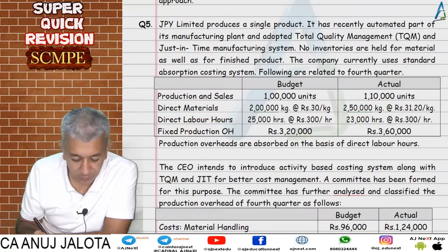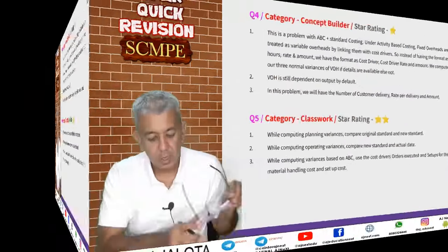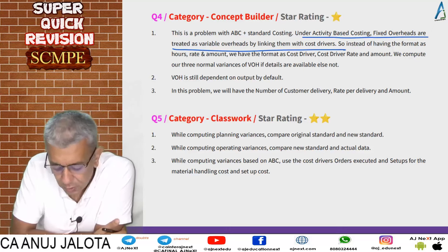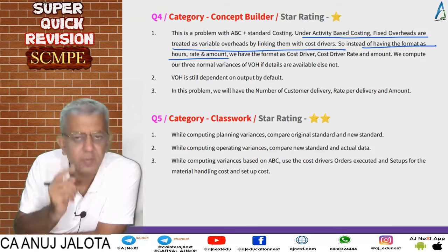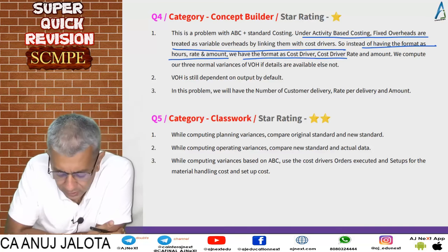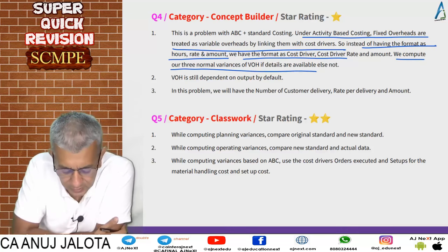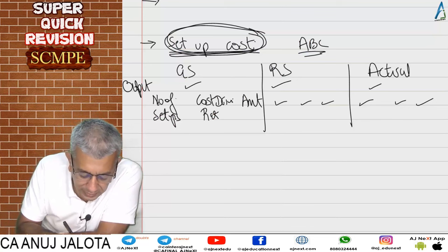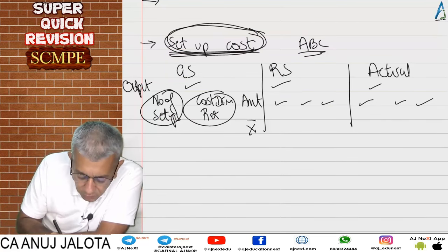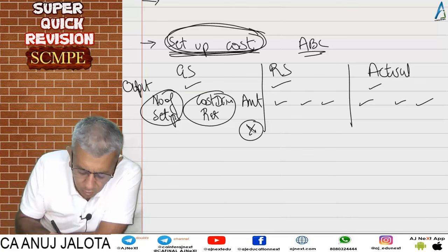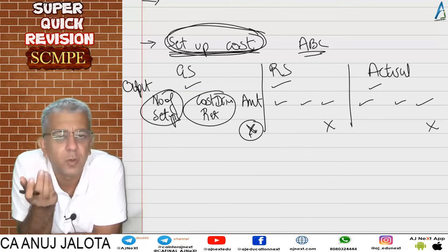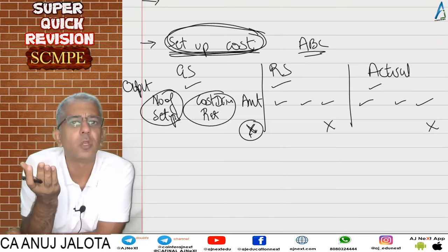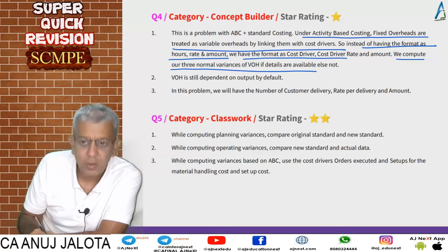For question number four, the key point is: under activity based costing, fixed overhead costs are treated as variable overheads by linking them with a cost driver. Instead of the usual output/rate/amount format, the format is cost driver/cost driver rate/amount. We compute the three normal variable overhead variances if details are available. If not — if only amounts are given without cost driver breakup — we can only compute one single variance.